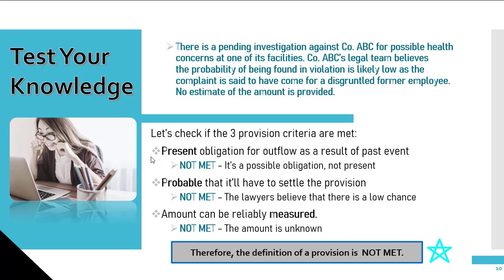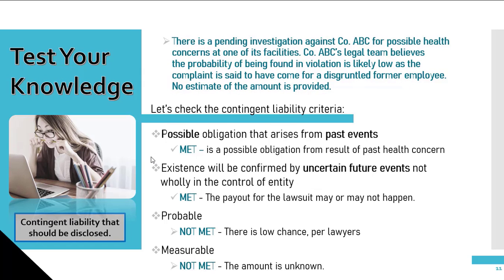Because the outflow of resources is not probable and no estimate is given, this is in fact not a provision. So now let's check if it meets the criteria of a contingent liability. In terms of possible obligation that arises from past events, this is met as it is a possible obligation as a result of a past health concern. Existence will be confirmed by occurrence or non-occurrence of uncertain future events — this is met as a payout for the lawsuit may or may not happen. In this case, the outflow of resources is not probable and is not measurable. Therefore, this contingent liability should be disclosed.